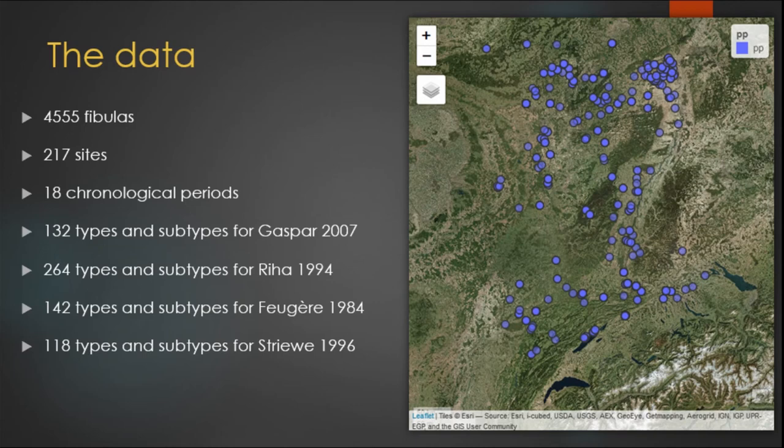This distribution into types and subtypes is based on the typological alignment of the four typologies studied here. This alignment is based on the equivalences between the types given in each respective typology, and in particular in Gaspar, which is the most recent. When equivalence was not clearly established and an illustration of the artifact was available, I created the alignment myself. If this was not possible, I assigned the unique ID 0 to indicate that there is no equivalence with this typology.